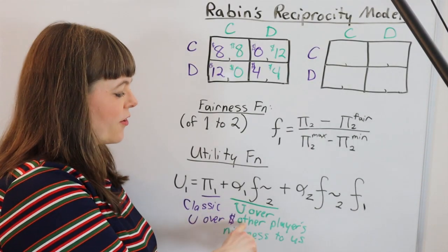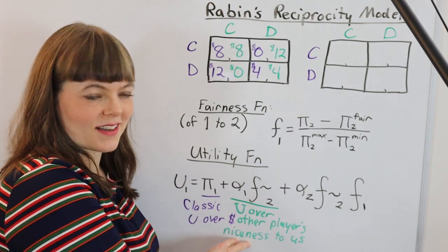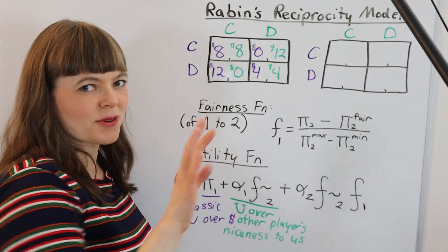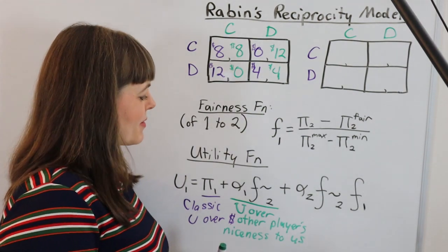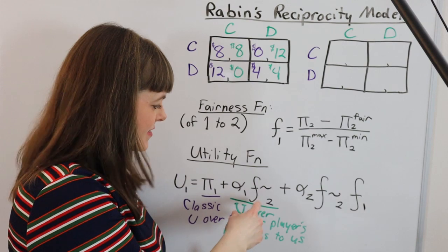That's our utility over other player's niceness toward us. I don't even know if niceness is a word, but I am using some of the language that Matt Rabin uses. How nice are they to us?